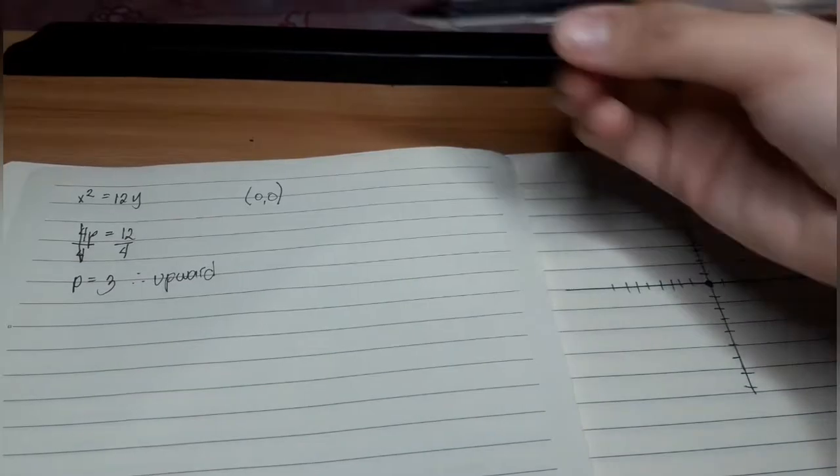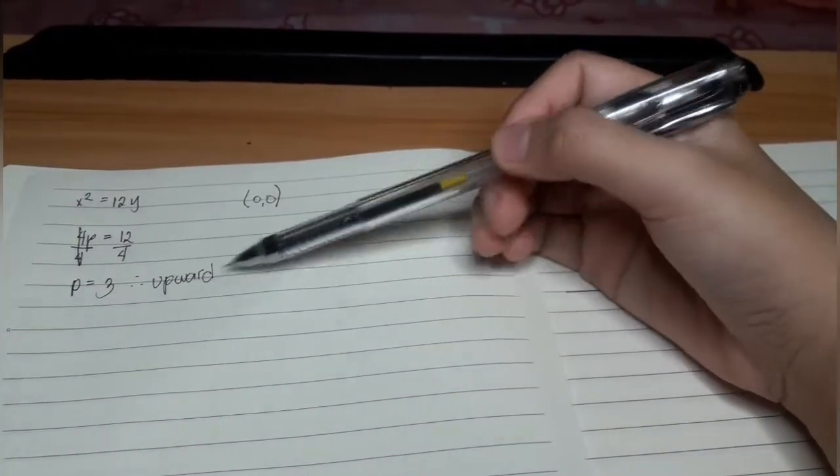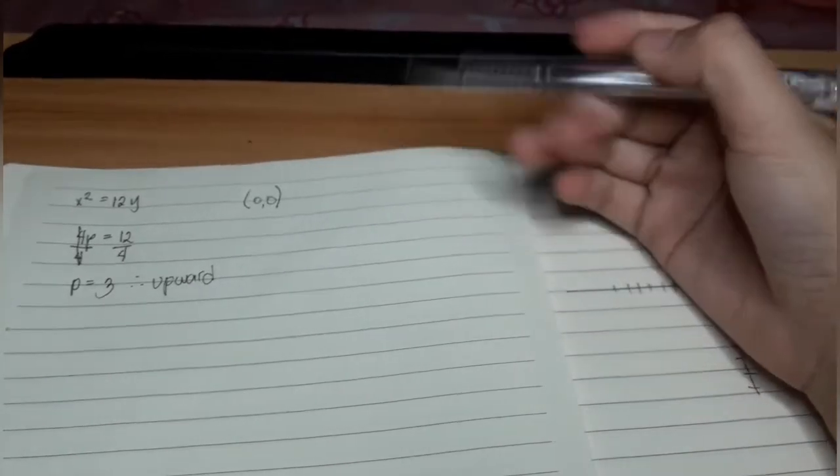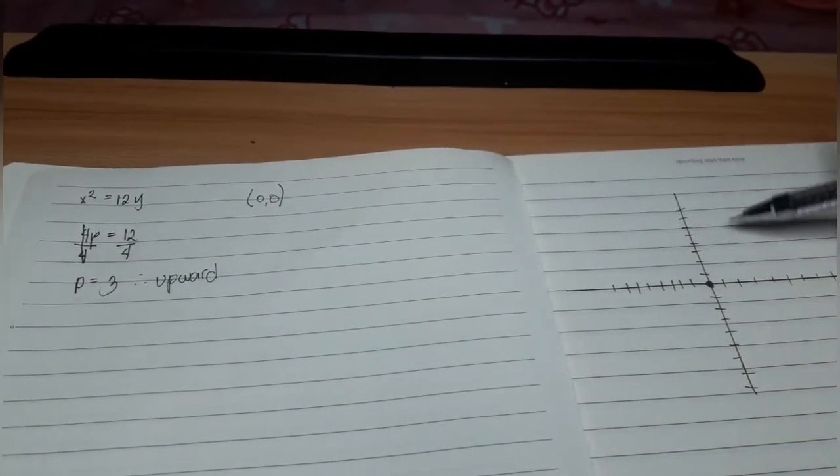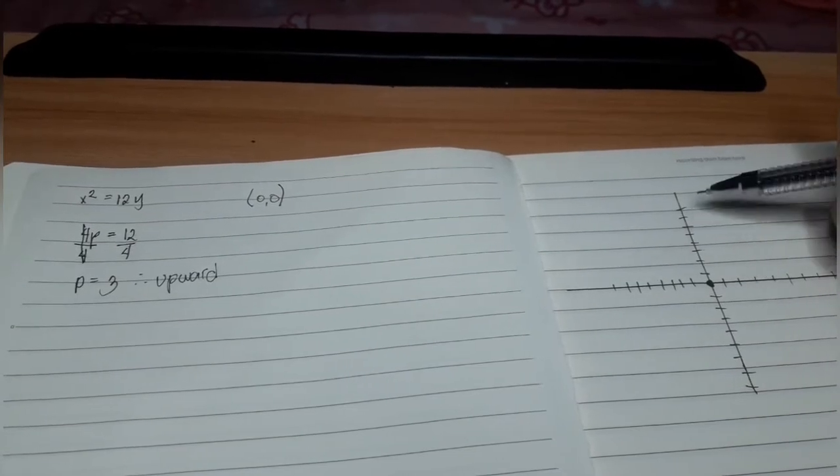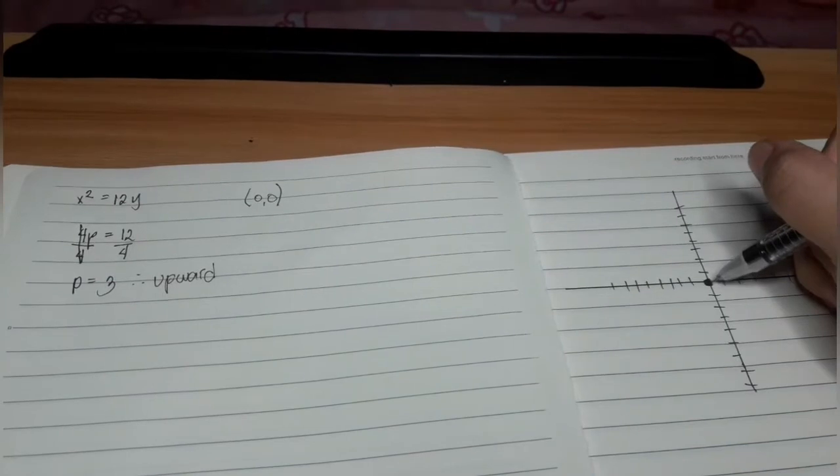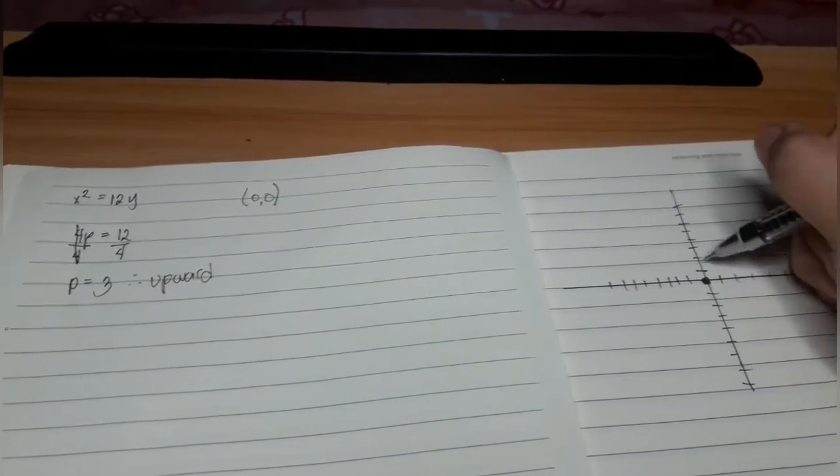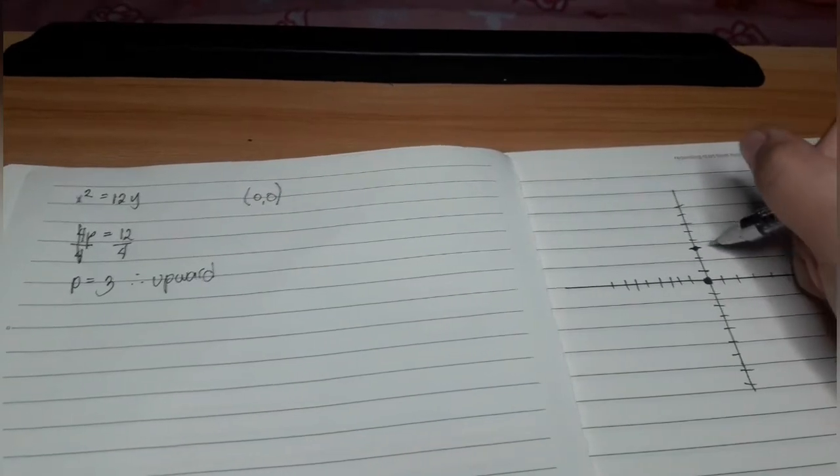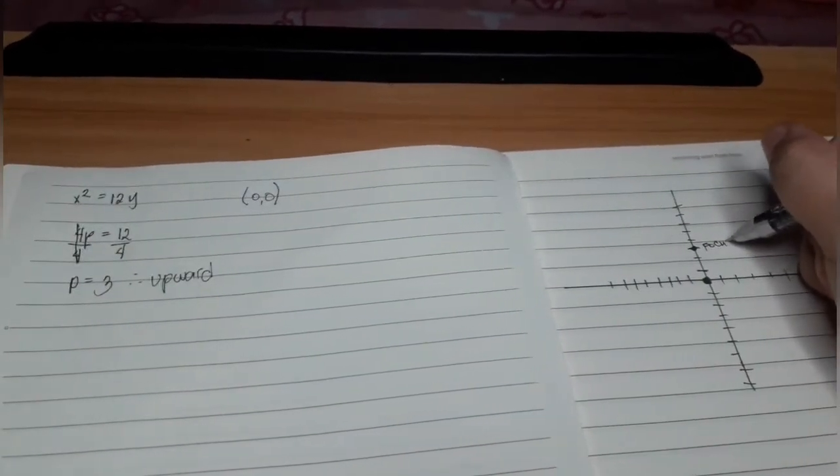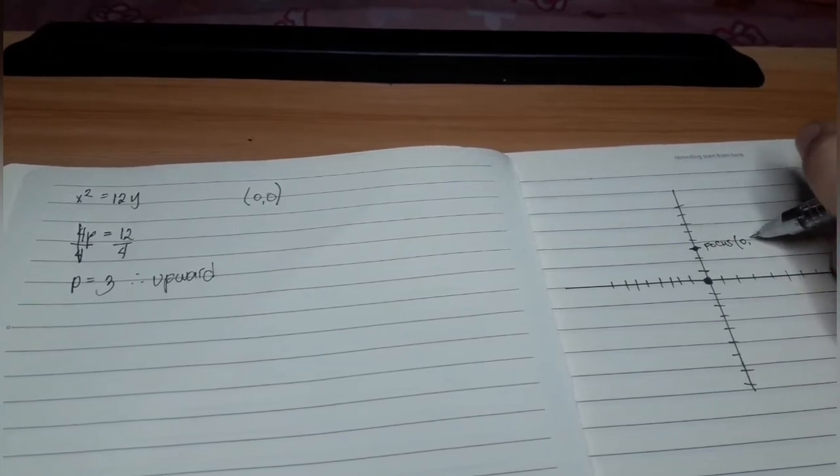We already got the p and the parabola opens upward. So, meaning to say our focus is here. In order for us to find the focus, we need to move 3 upwards. So 1, 2, 3. Focus is 0 and positive 3.